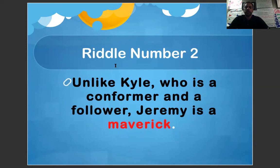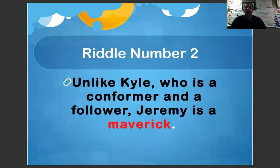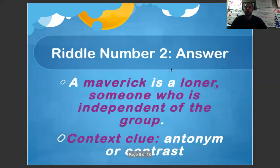Riddle number two. Unlike Kyle, who is a conformer and a follower, Jeremy is a maverick. Answer: a maverick is a loner, someone who is independent of the group. Our context clue was an antonym or contrast. The word unlike let us know we were looking at an antonym or contrast.